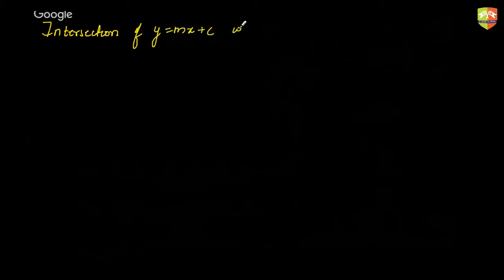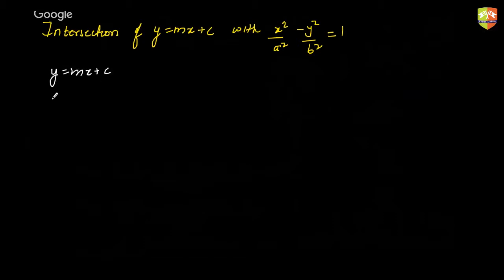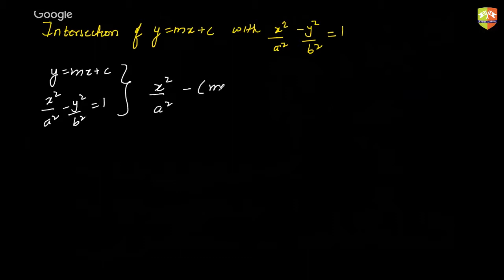Next is the concept of intersection of the line y = mx + c with the standard case of a hyperbola. The concept is pretty much the same as what we had for an ellipse. We try to simultaneously solve these two by substituting y as mx + c in the other equation. That gives you x²/a² minus (mx + c)²/b² = 1.